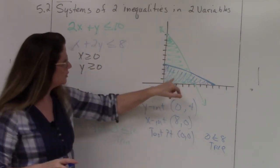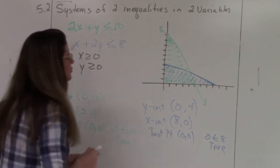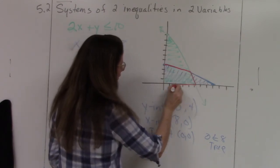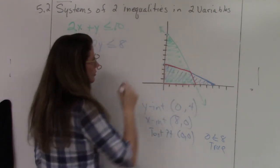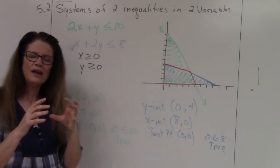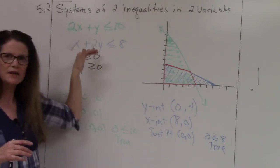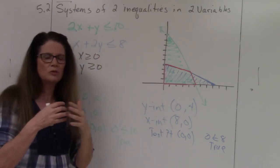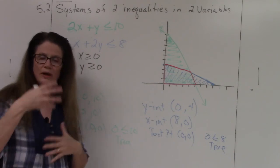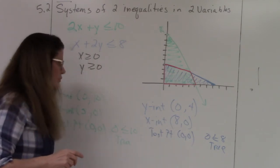The test point is again (0, 0): 0 + 0 = 0, which is less than 8 — a true statement — so I shade below the blue line. Now, looking closely, the double-shaded area is the feasible region. Where the shading overlaps, that indicates the only points that will satisfy both inequalities.